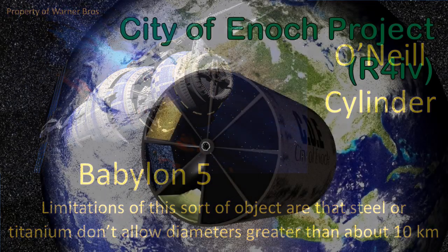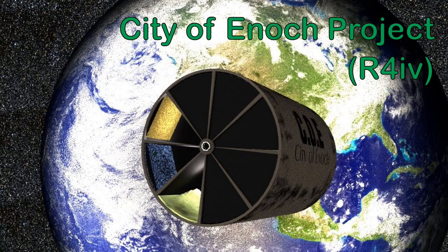These all work under an assumption you just cannot build a space station more than about 10 kilometers in diameter before it's going to start ripping itself apart from normal metals. Here's another example from the City of Enoch project, you can check out their Facebook page.